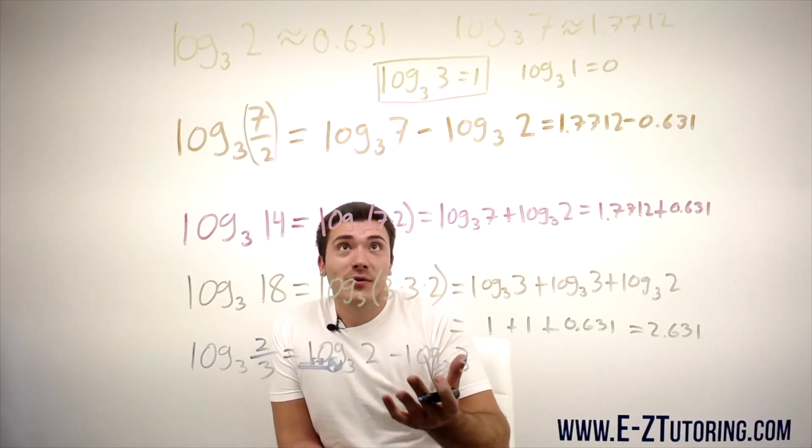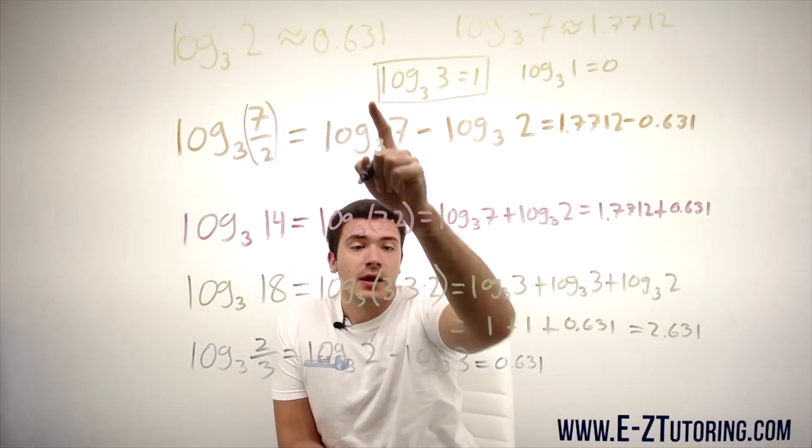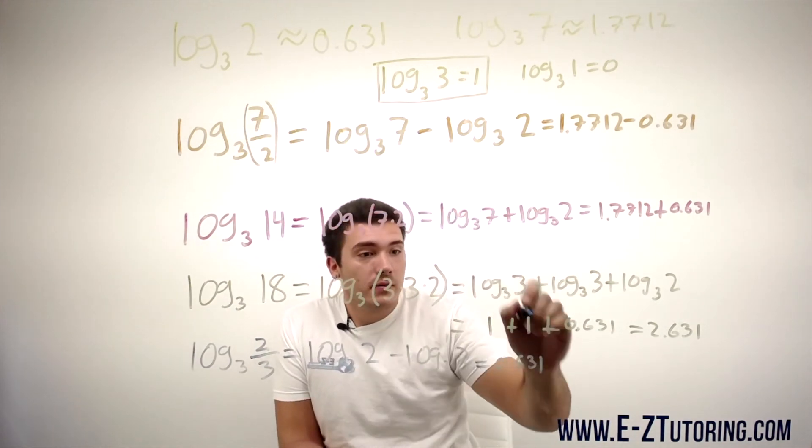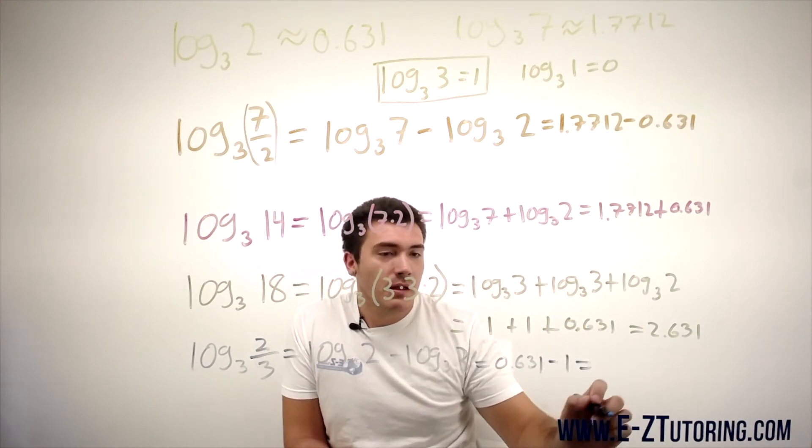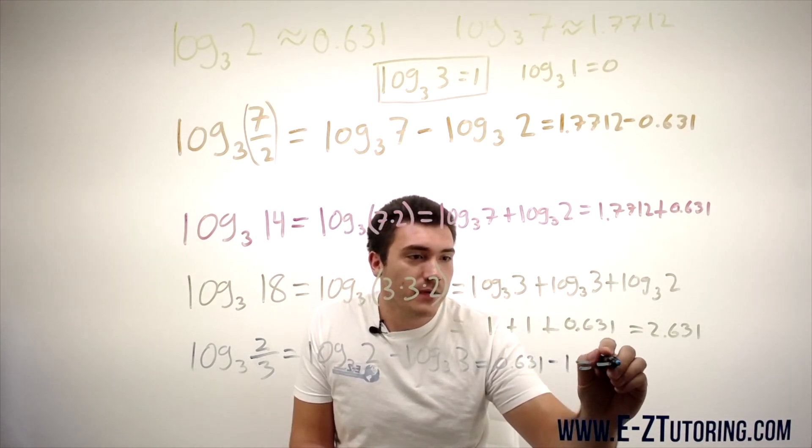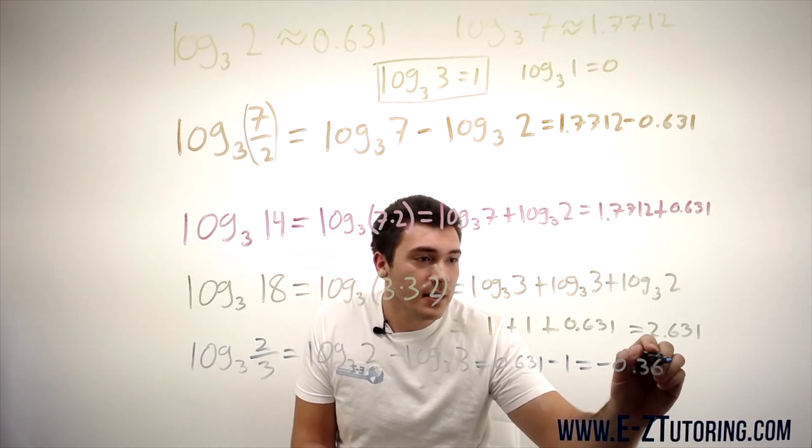And we know the values of these already. This is simply 0.631 from here minus 1 from here. Then you plug this into a calculator. We could do some mental math here. Have a little fun. This is negative 0.369.